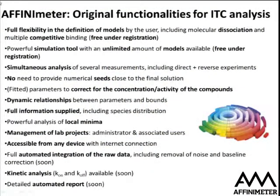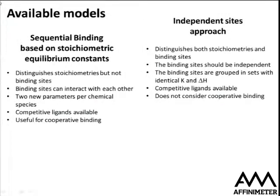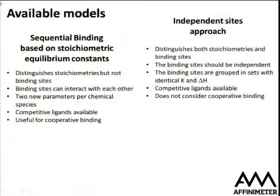This is a list of original functionalities for ITC analysis currently implemented in Affinimiter. I will focus my presentation on a description of almost all these original functionalities. First, I will make a summary of the available models. The current software of commercial instruments makes available a relatively short list of specific models for binding, dissociation, or aggregation processes. In Affinimiter we don't have a short list — we have an unlimited number of models available to the user, who can design their own model using a model builder. I will show how it works later.